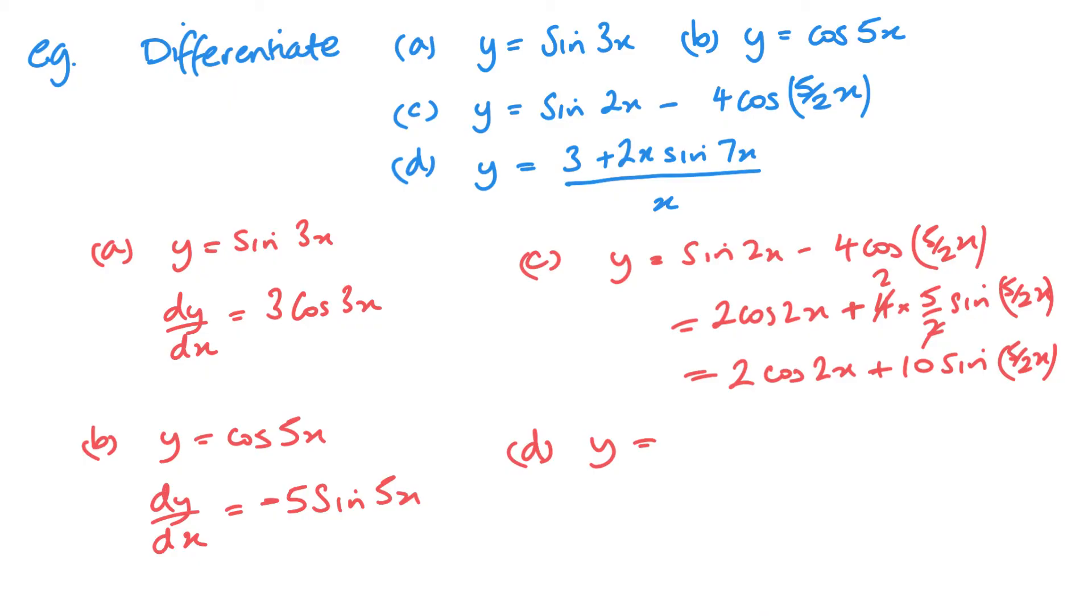Part d. So for this one, I've currently got a large single fraction. And I want to split this up. So I get 3 over x plus 2x sin 7x over x. Now this x will cancel with this one. So I get 3x to the minus 1 plus 2 sin 7x. And then differentiating, this minus one is going to come down. So I've got minus 3x to the minus 2. Sin differentiates to cos. So it's going to be positive. And I need to multiply by that 7. So you have 14 cos 7x. Remembering that the angle stays the same.